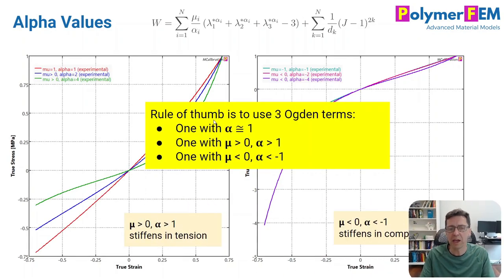So alpha positive has to do with tension, alpha negative has to do with compression and how the material responds. So one can come up with a rule of thumb based on this. I typically try to use three Ogden terms. One, I have alpha sort of close to 1 or around that. And then I have one where alpha is way more than 1 and one that alpha is way negative.